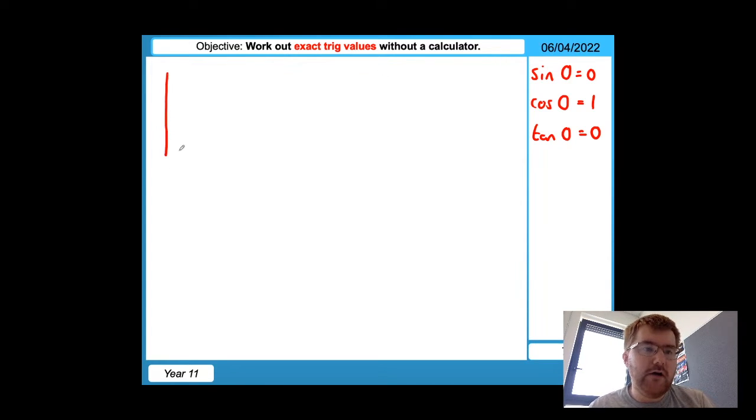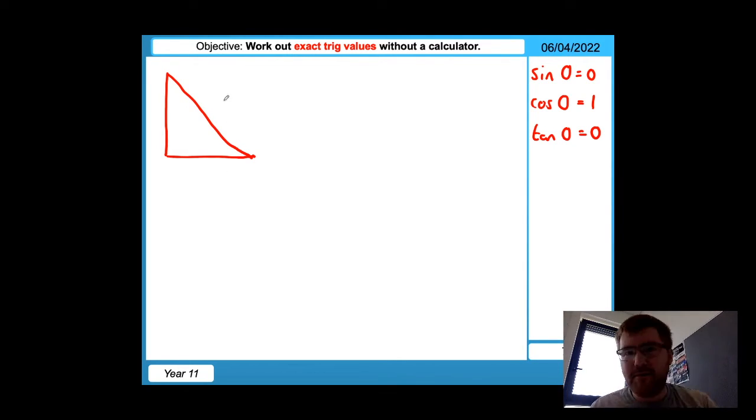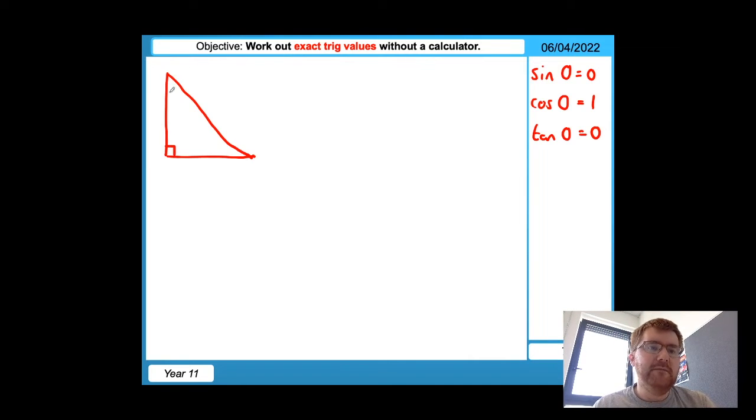So my first triangle, I'm going to draw over here. So this is a right angle triangle, and then we have a right angle here, and I'm going to make this side one, and this side one as well. Now, if I know these two sides, I can work out the hypotenuse here by using a bit of Pythagoras.